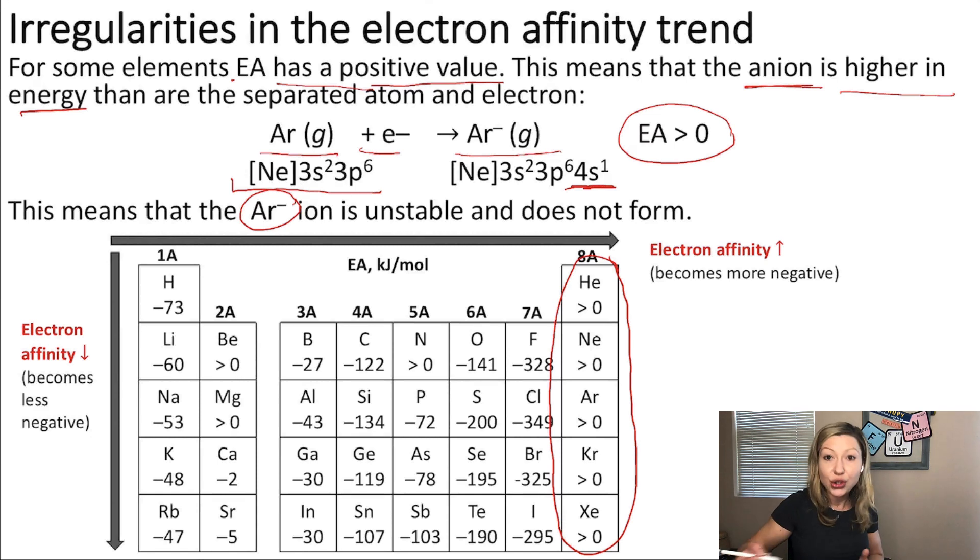And we said that the general trend is as you go down in a group, electron affinity should become less negative. Well, let's take a look at the numbers. Here we have the electron affinities in kilojoule per mole. Let's look at halogens. Those are the 7a group elements. You can see that indeed the trend works for chlorine, bromine, and iodine because the values are becoming less and less negative, right?